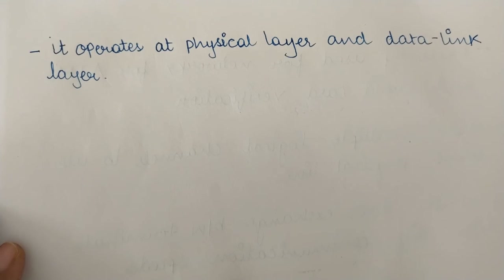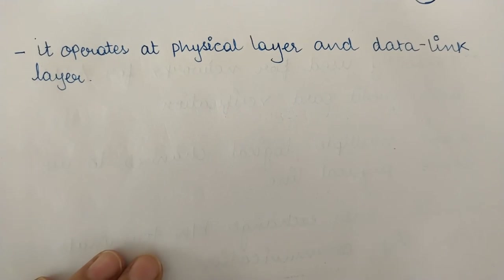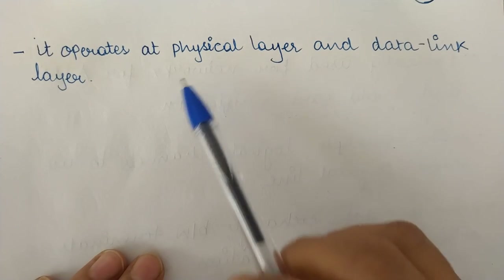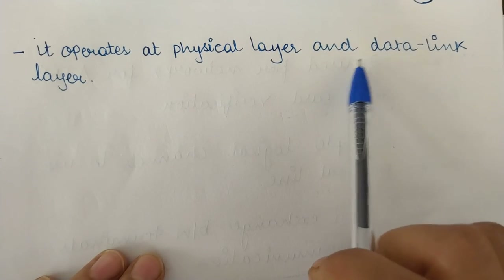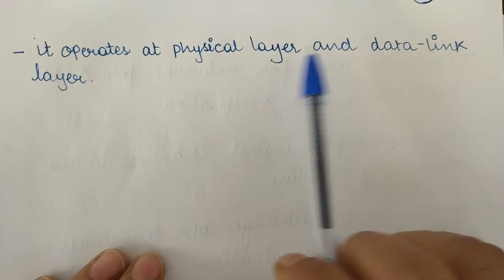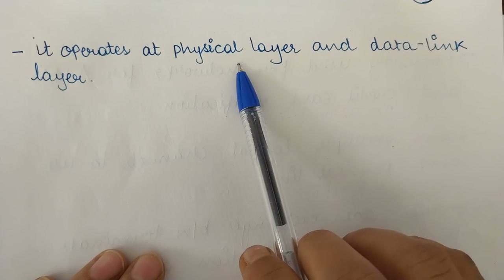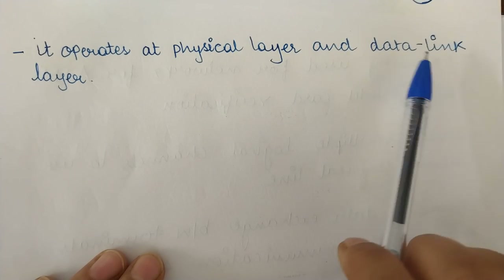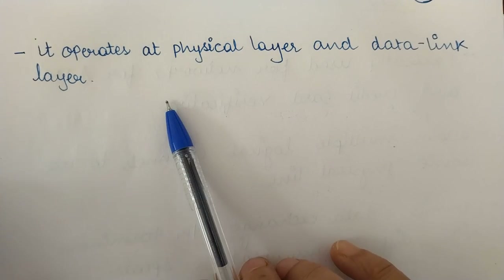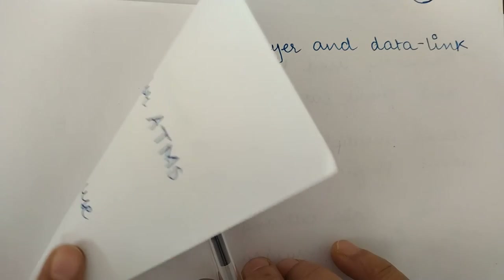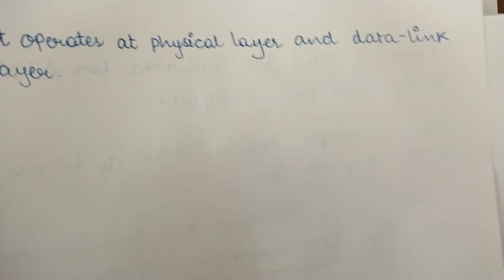The layers at which Frame Relay operates are the physical layer and the data link layer. These are the two layers at which Frame Relay operates.